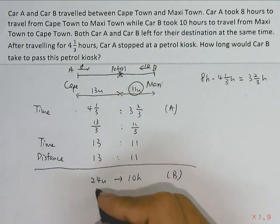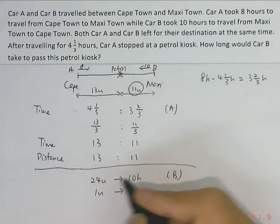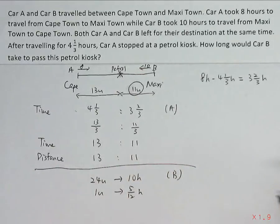So we will first find one unit. So 10 divided by 24, we will have 5/12 hours. Then to find 11 units.